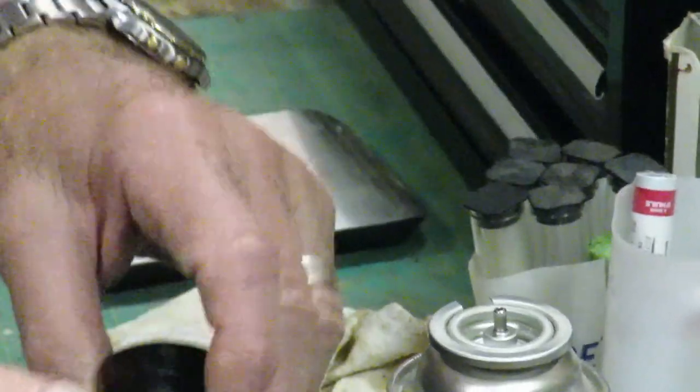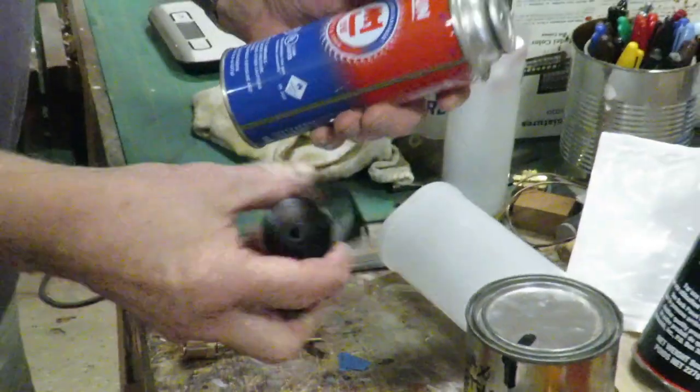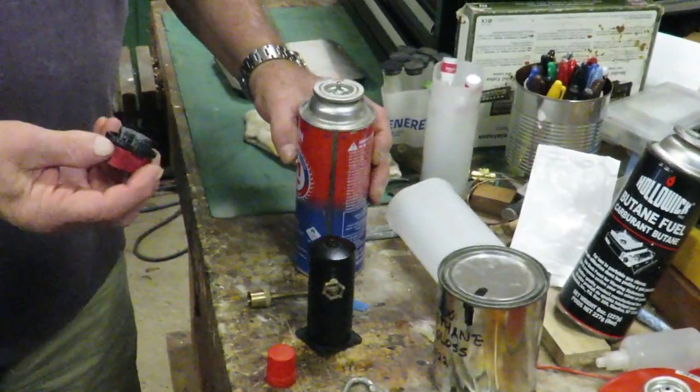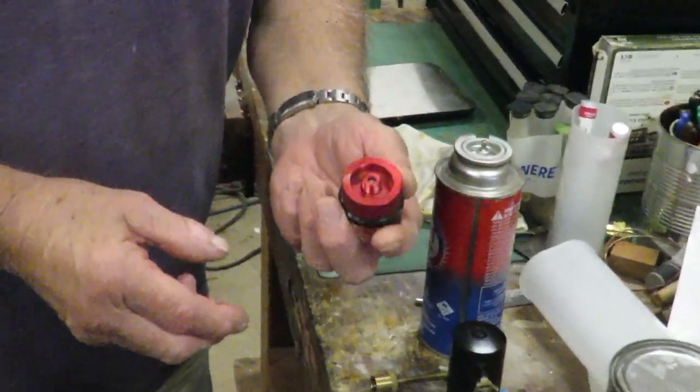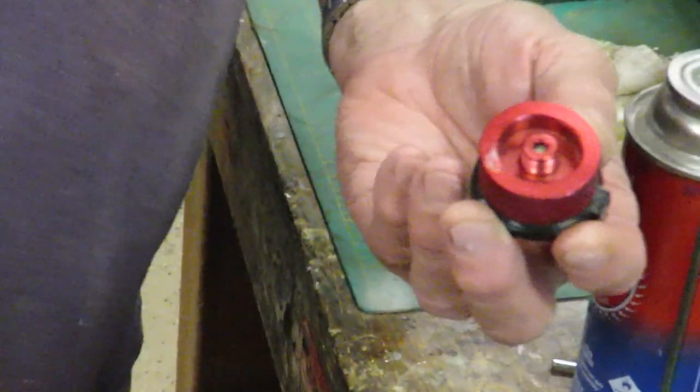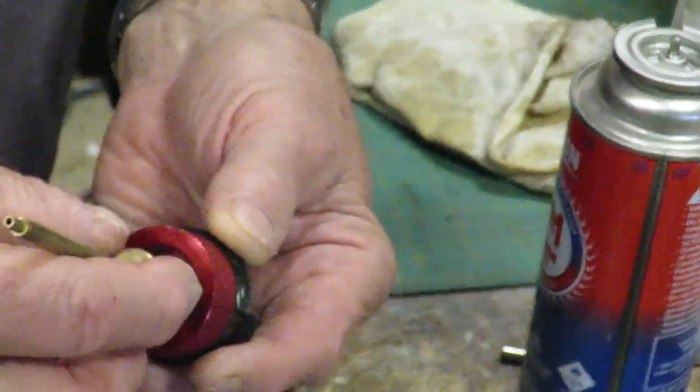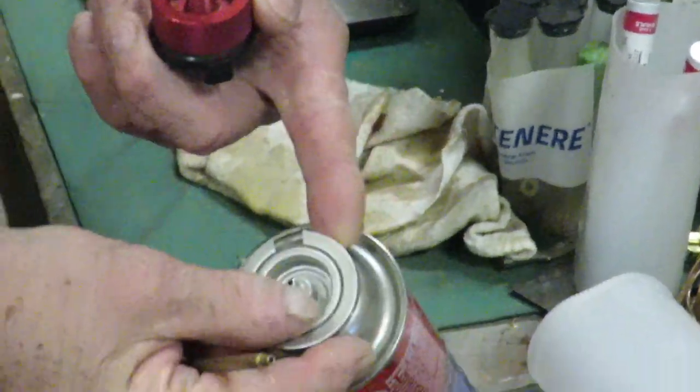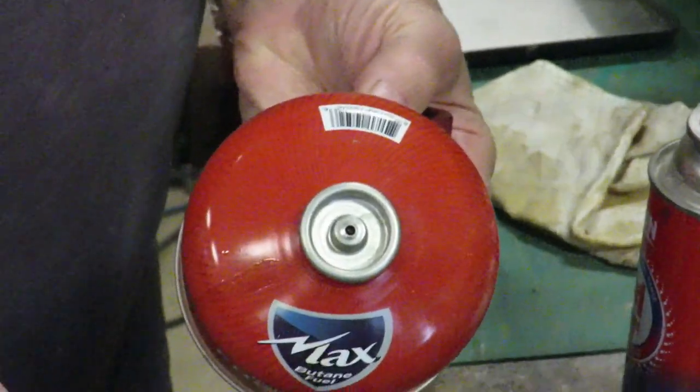The trick now is to get the butane out of here and into here. The way they do that is with an adapter. The first adapter is this device which connects to this device. The reason for this is that sometimes you have this type of connection and sometimes this type of connection in a can of butane.